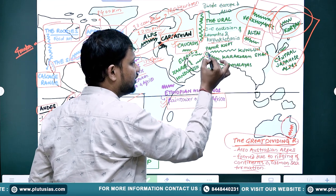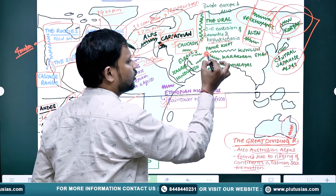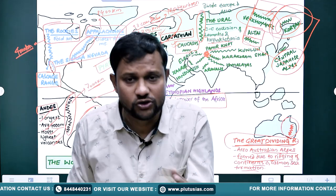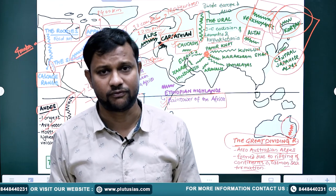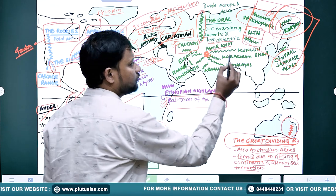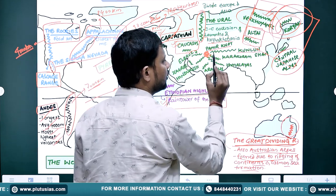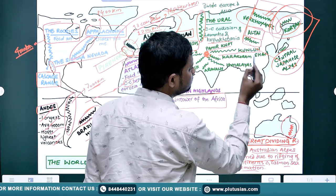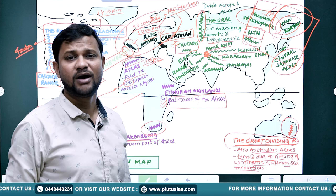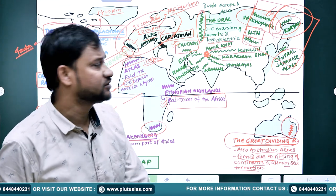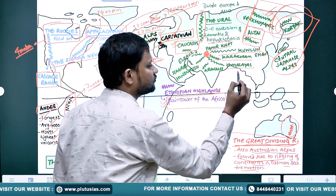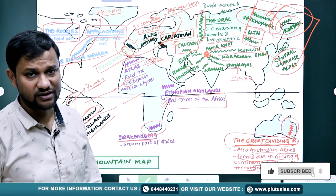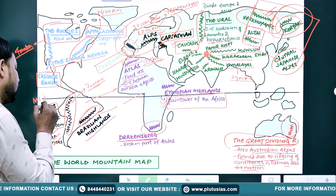Connecting to the key hub is the Pamir Plateau — the point of origin of a number of mountain ranges in the region. From the Pamir you find: Kunlun Shan in the China region, then the Karakoram ranges and Trans-Himalayan ranges, and then the Himalayas, stretching almost 2,400 kilometers where the world's highest peak — Mount Aconcagua… sorry, Mount Everest — is located.